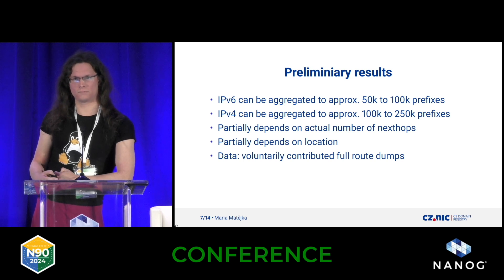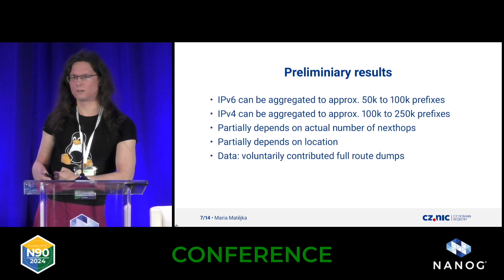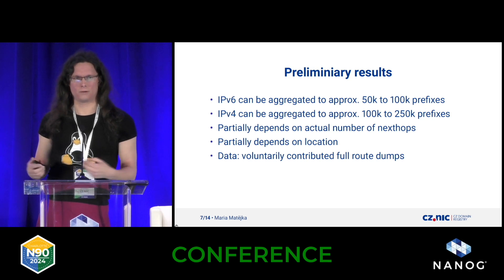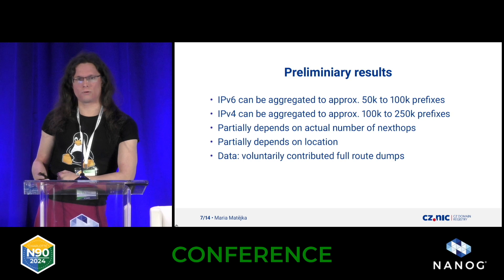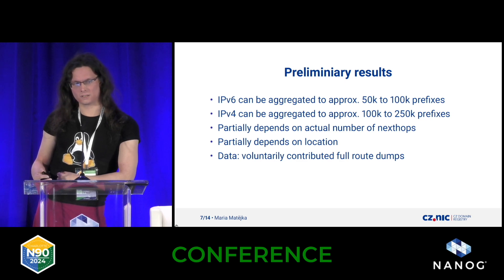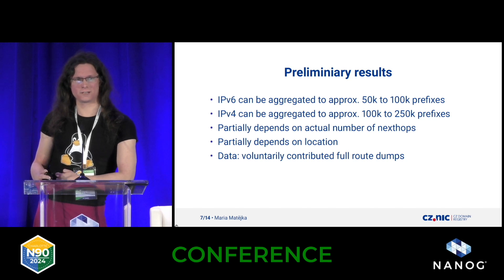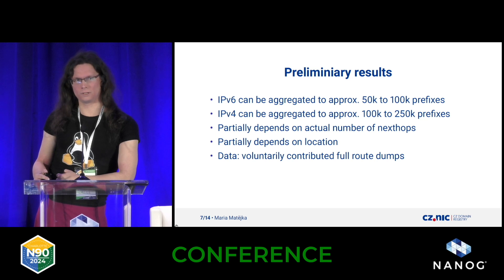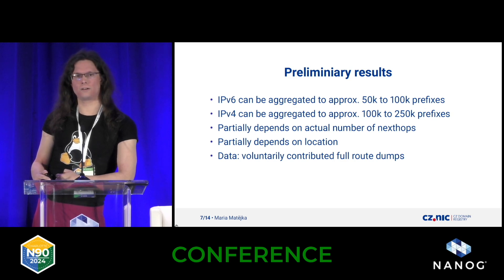IPv4 could be aggregated to something between 100,000 and a quarter million. It actually depends on how many next hops you have from your machine. So if you are having only two uplinks and one downlink — one network — you are going to those lower values, like 100,000 routes for IPv4 or 50,000 for IPv6. If you are having 1,000 peers, like if you are sitting in DE-CIX or in Sao Paulo, Brazil, you are getting much more next hops, but it still gets quite low. You are typically not getting over a quarter million in IPv4.